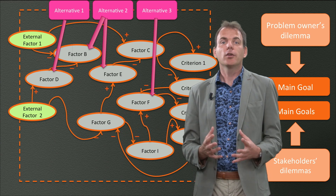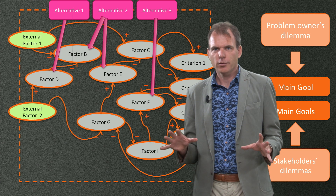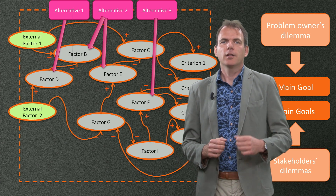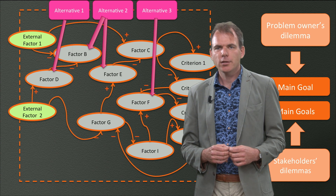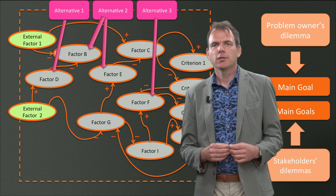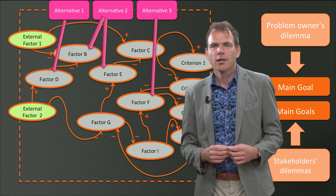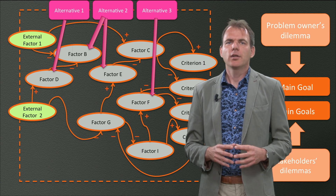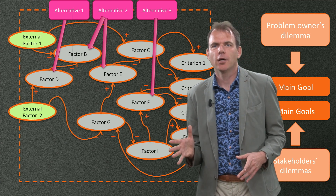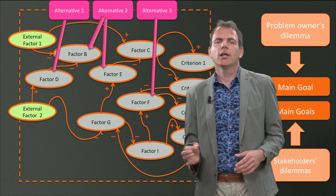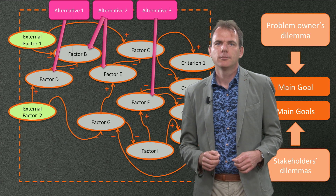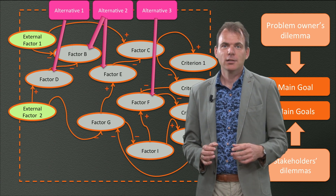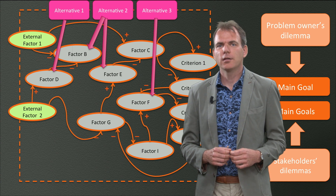That means that they also influence the criteria via the causal relationships. And these criteria represent everything that you and your actors find so important. So there are factors in your complex problem situation that you cannot influence, but they themselves do change the value of your criteria.